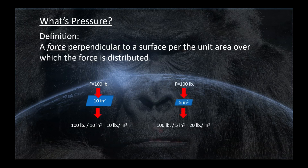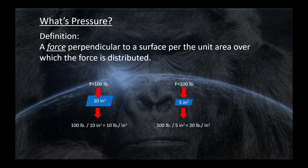Here's another example. That same 100-pound force applied to a five square inch area would be 20 pounds per square inch — twice the pressure, same amount of force, but twice the pressure because the area is only half as large.